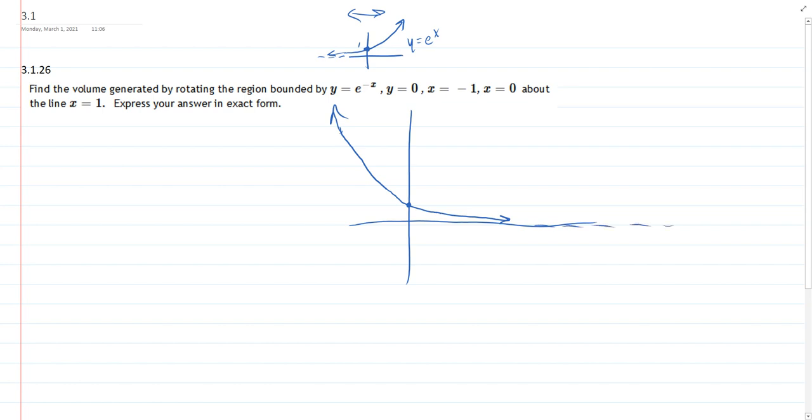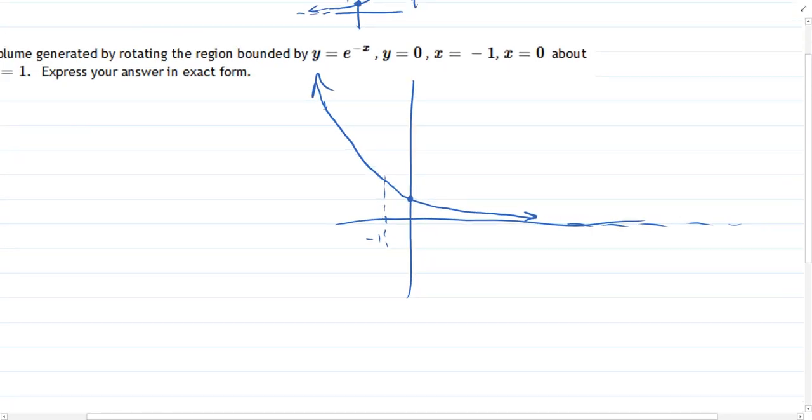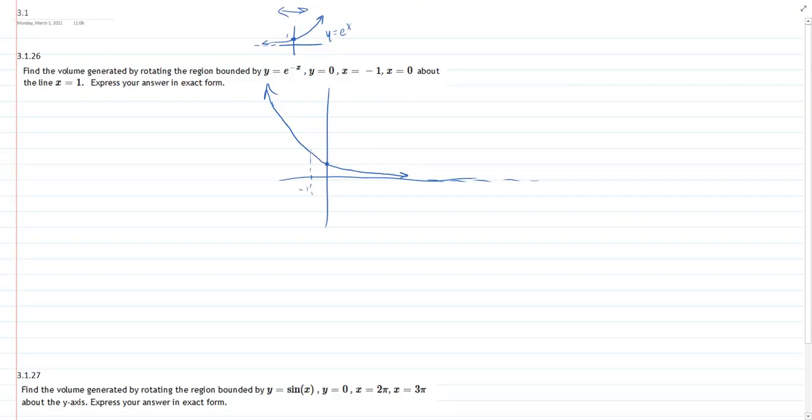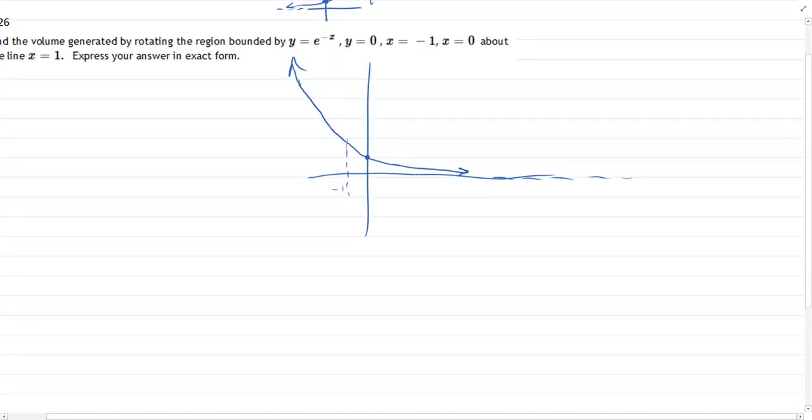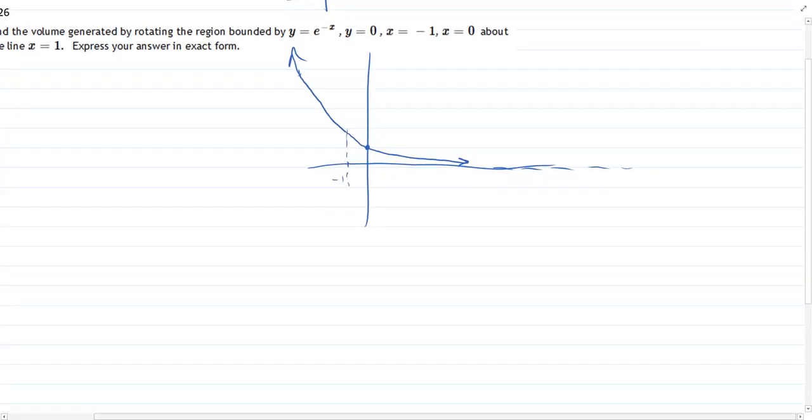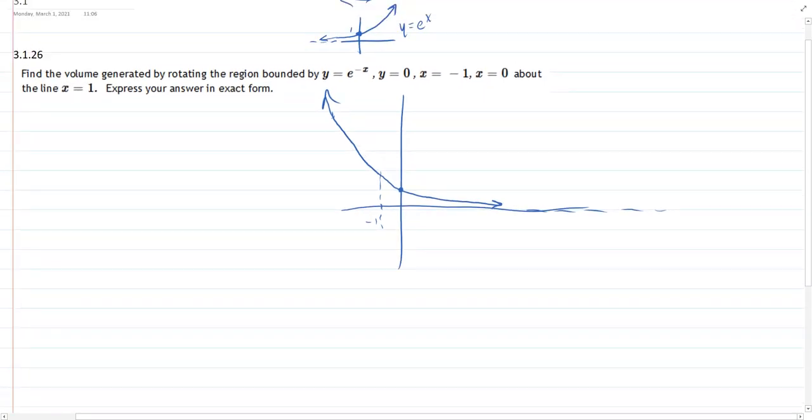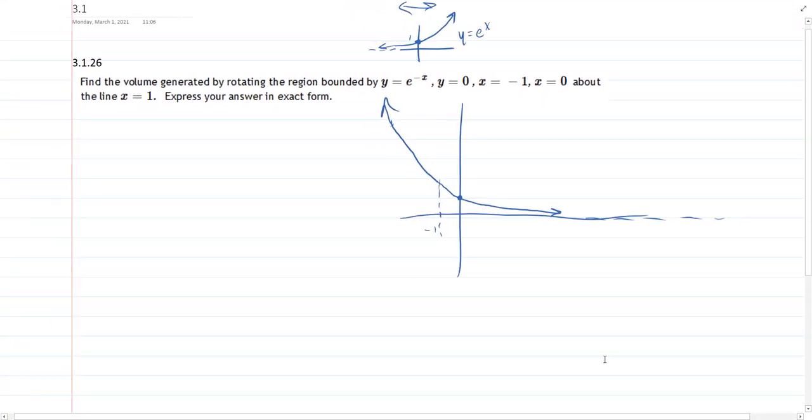We have a couple other lines. y equals 0 is the x-axis. x equals negative 1 is this vertical line. And last up x equals 0, that x equals 0, there we go. x equals 0 is the y-axis. So this is the region we're going to rotate right there.